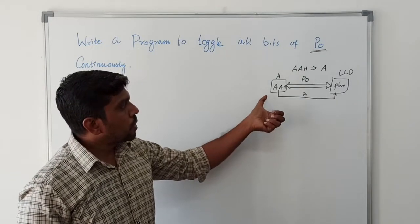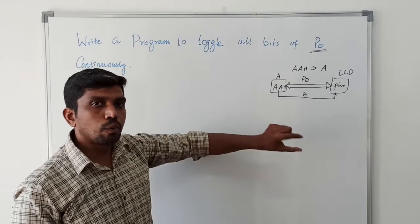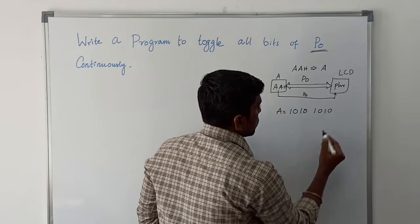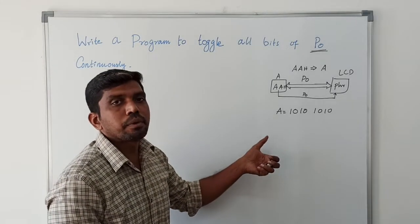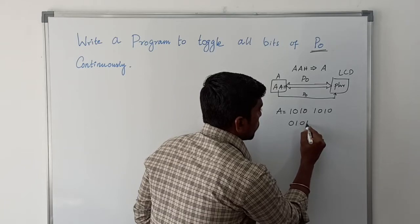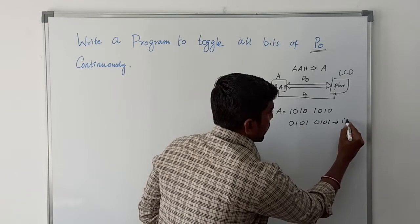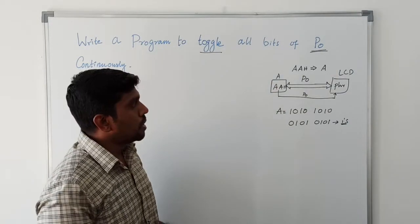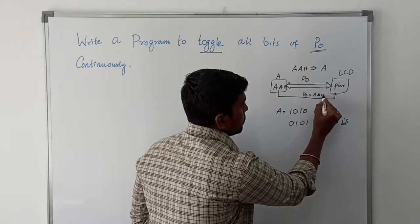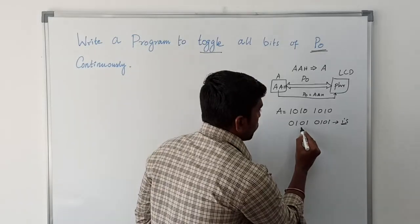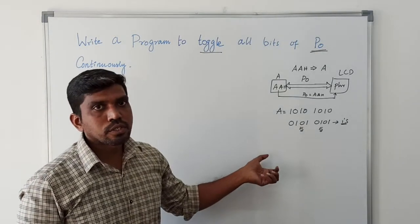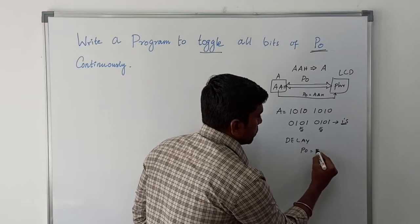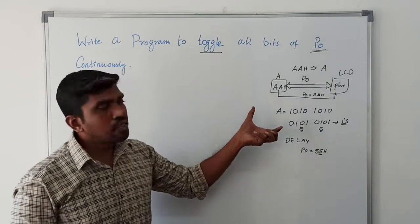After that, whatever value is present in the accumulator, that content takes the one's complement. The accumulator content is AAH, which is 10101010 in binary. After taking the one's complement, the result is 01010101. This process is called toggle. So toggling all bits of P0: first P0 carries AAH, and after toggling the accumulator content becomes 55H. Then I introduce some delay, after which P0 carries the value 55H. This is the basic concept of the program.